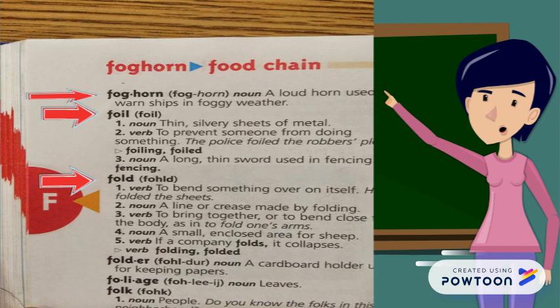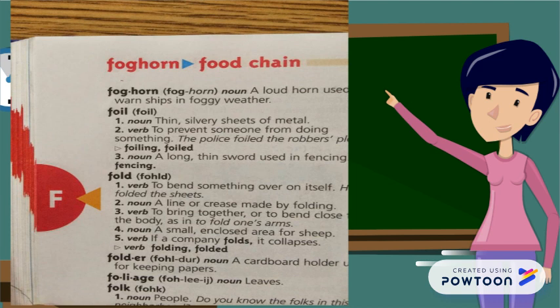In the dictionary, after the entry words, in parentheses, it tells you how to pronounce the word. So for example, we know that foliage at the bottom is pronounced fo-li-age.